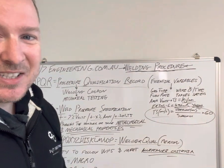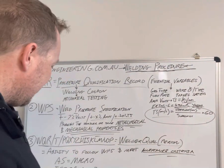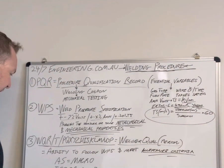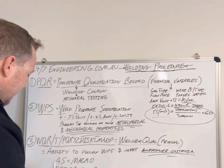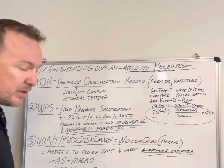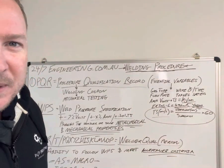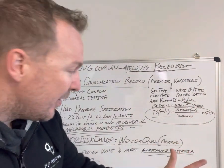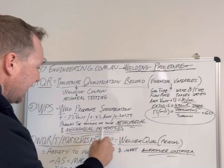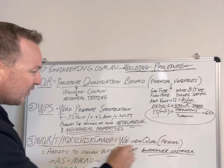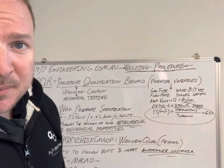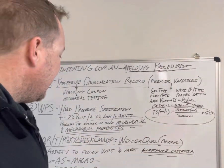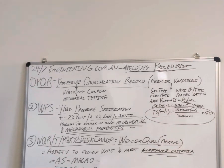The relevant standards are often AS 1554.6, AWS D1.1, B31.3, and ISO 9606 — which is the new standard taking over. I'll do another video on that. Under the Australian Standards, typically you only need to do a macro test, which is pretty straightforward, because we already know the mechanical properties exist from the WPS.